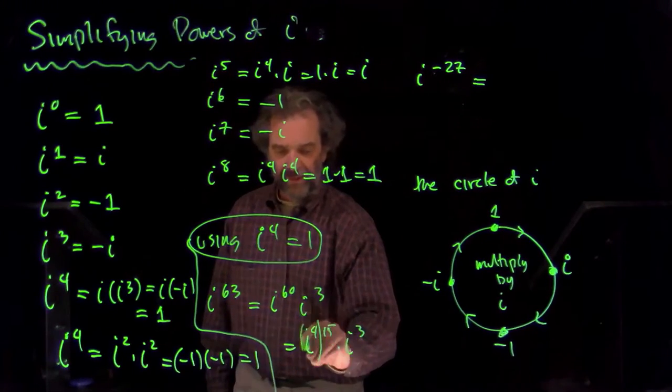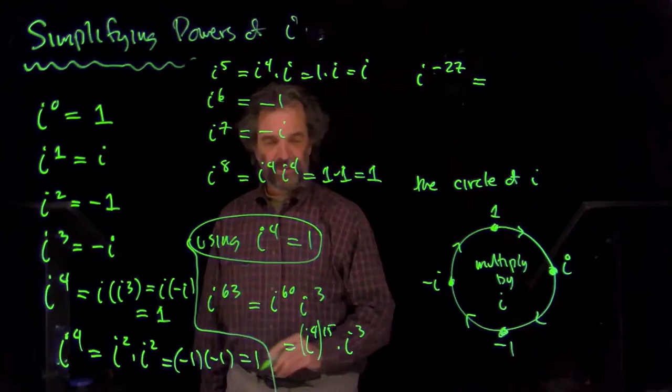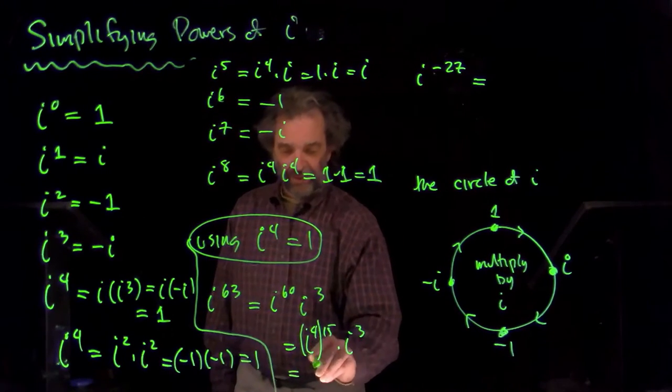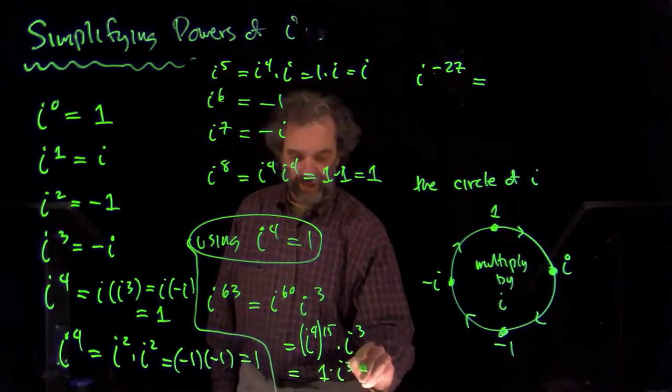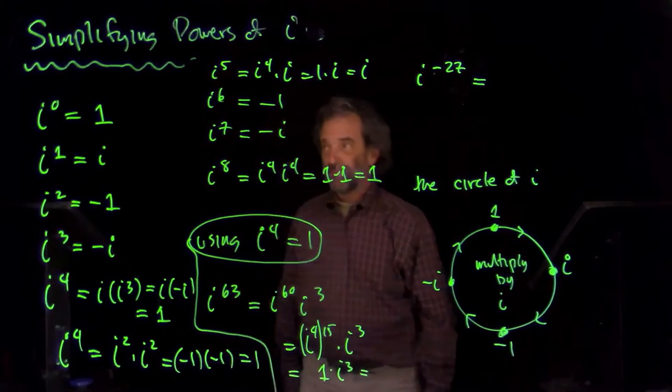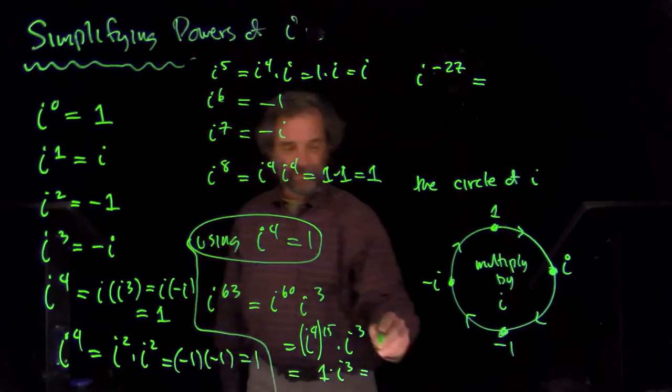And four times fifteen is i to the fourth to the fifteenth. That's the rules for exponents. So, that's just going to be one times i cubed. And i cubed, we just said i cubed is minus i. So, I get minus i.